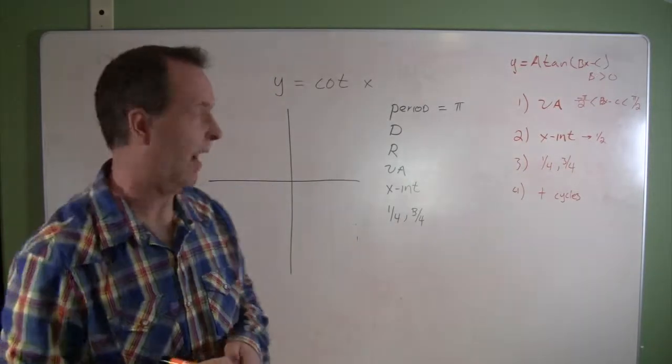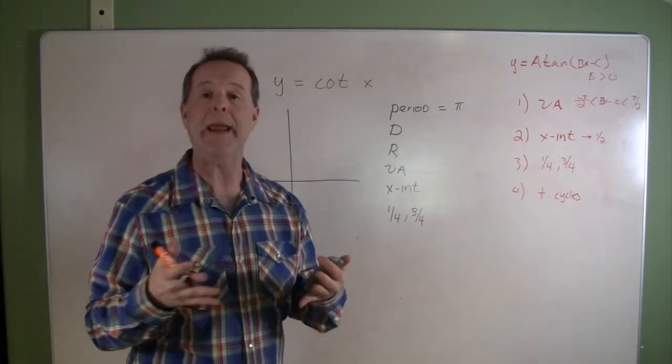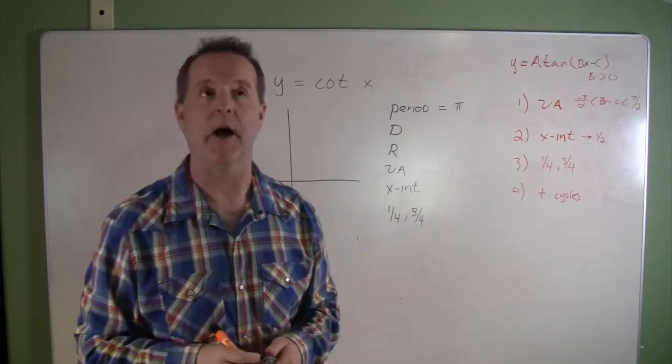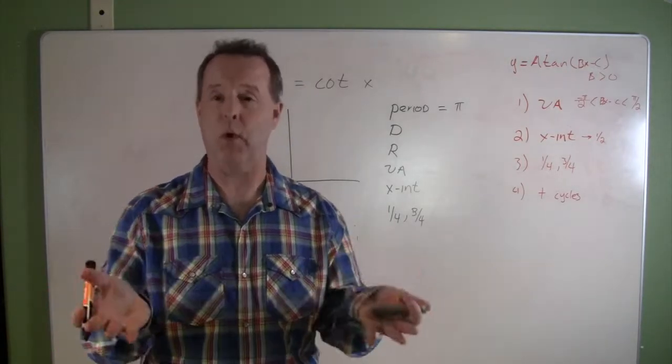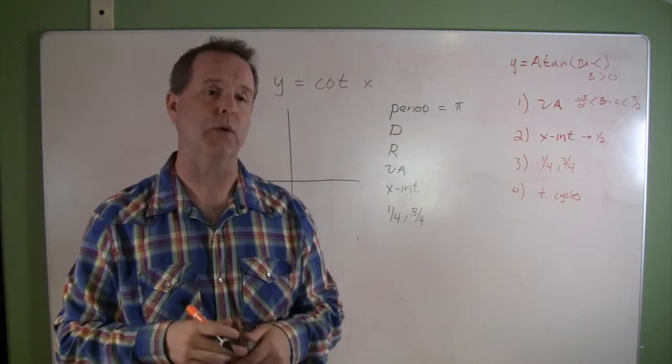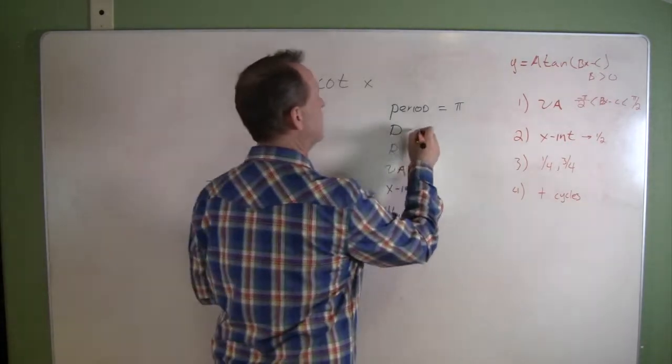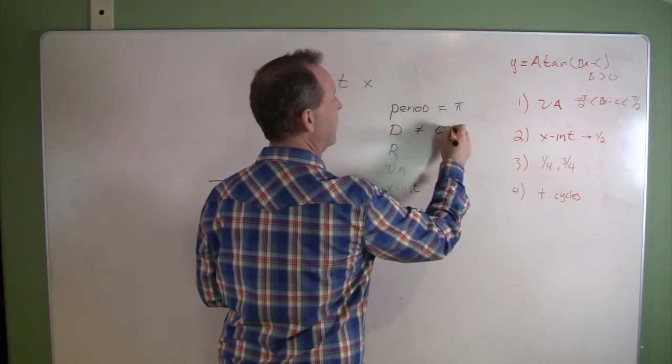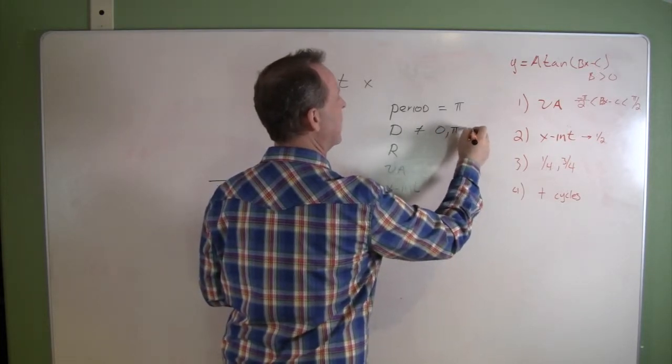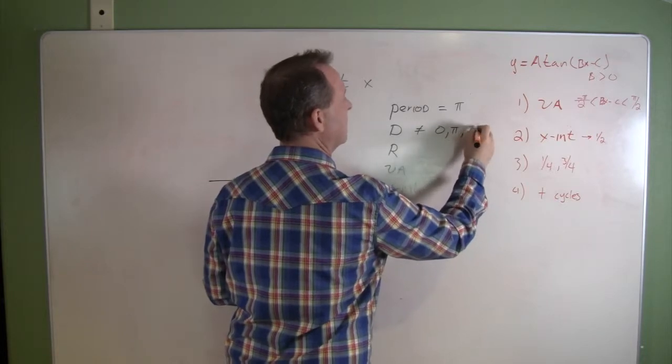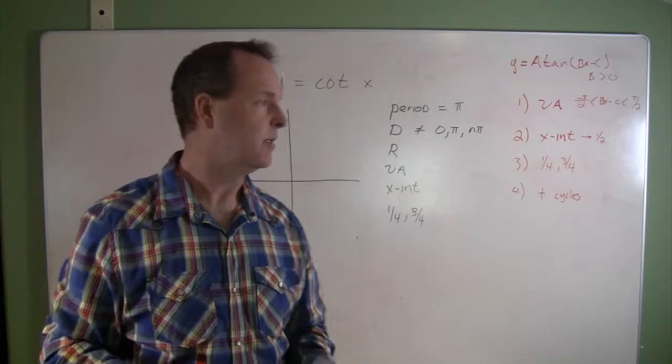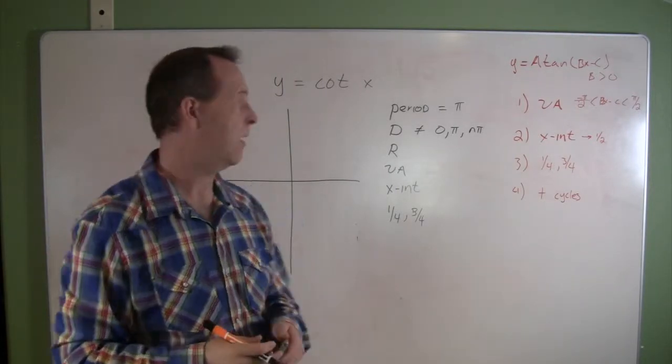Its domain—domain means all the places where it's defined, or all the places except where it's undefined. The cotangent is undefined at 0 and π, and as we continue on, all multiples of π: 0, π, 2π, 3π, 4π, and so forth.